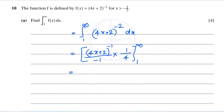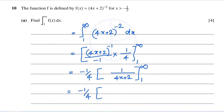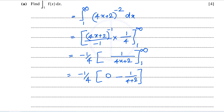Let's rearrange this. Negative 1 over 4 can be taken out, so we have 1 over 4x plus 2, with the limit from 1 to infinity. Negative 1 over 4 multiplied by: when you substitute infinity for x you get 1 over infinity, which is 0. Minus, substitute 1, and we get 1 over 4 plus 2, which is 1 over 6. So minus multiplied by minus gives plus, and 1 over 4 multiplied by 6 is 24, giving 1 over 24.